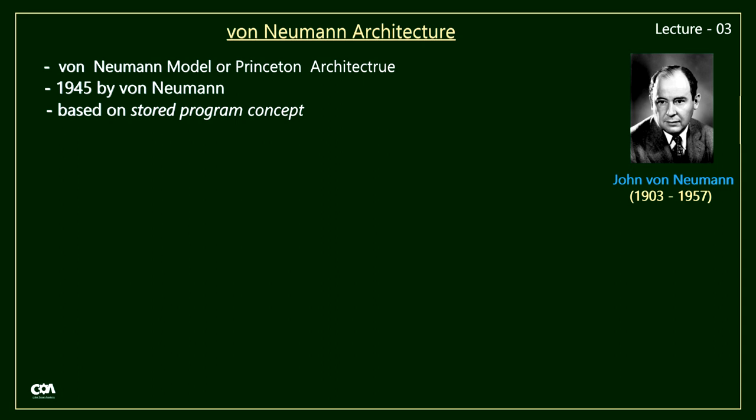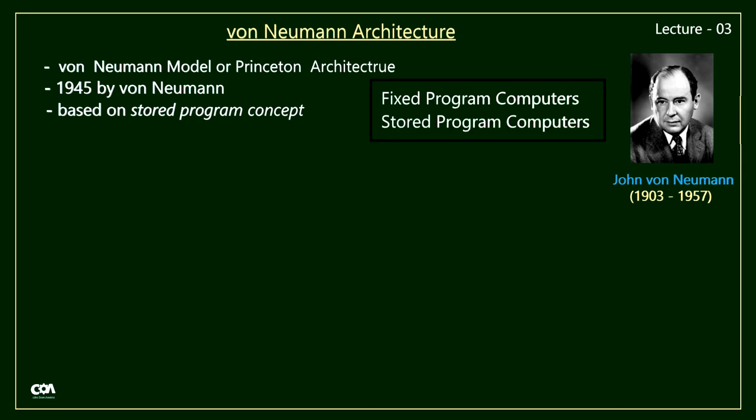Historically, there are two types of computers: fixed program computers and stored program computers. Fixed program computers are very specific — they are used for a specific task, their function is specific, and they cannot be reprogrammed. An example of fixed program computers is calculators. Stored program computers are programmable multi-purpose computers which can store tasks or data, and all modern computers are based on the stored program concept.